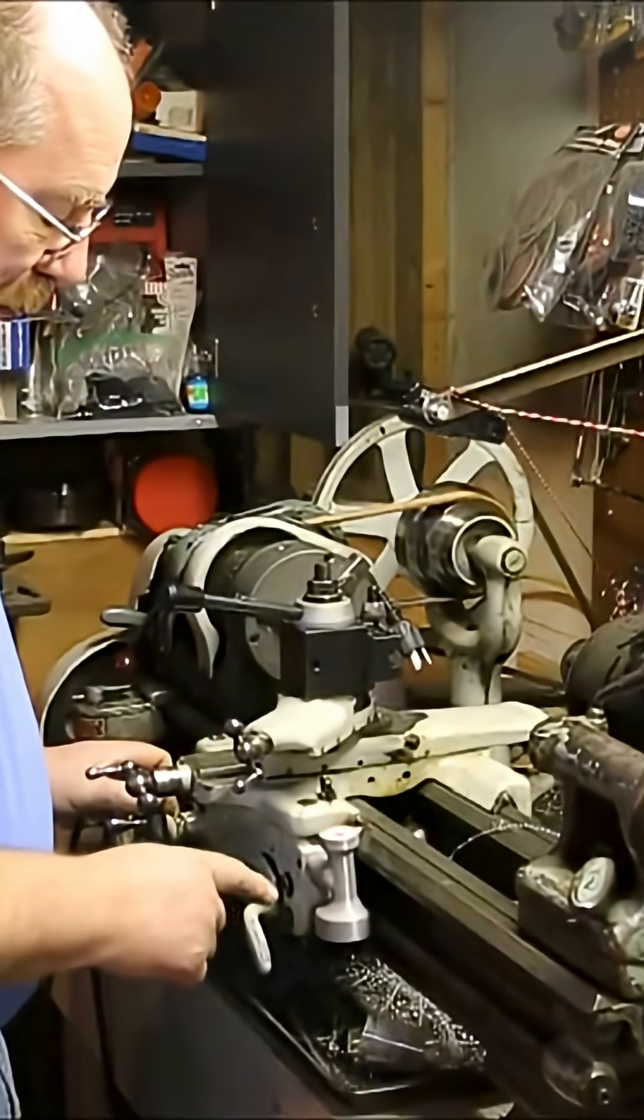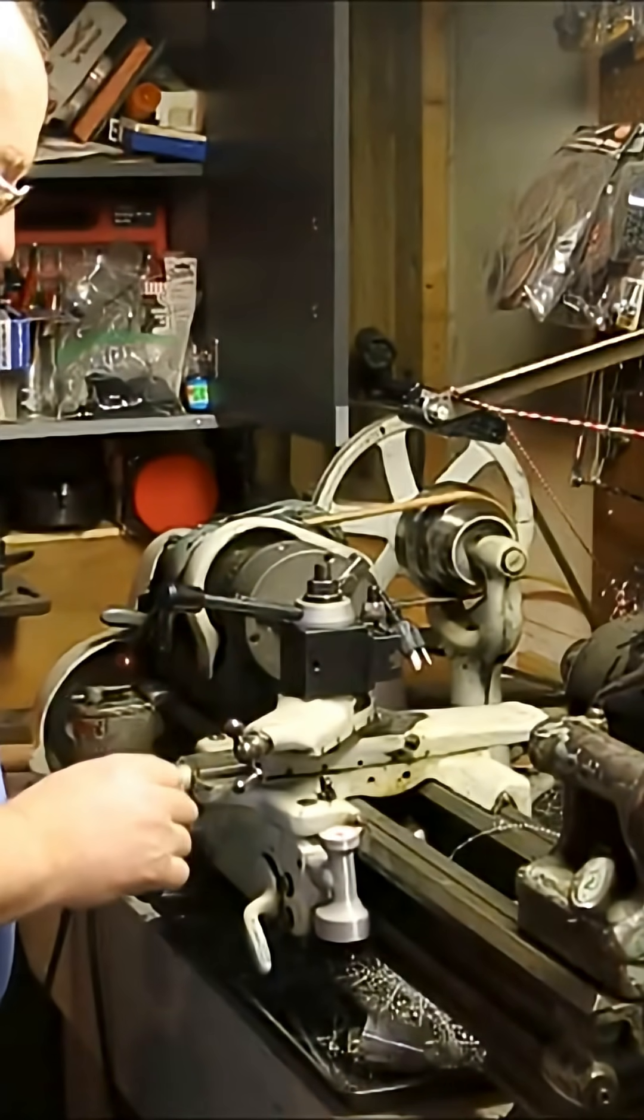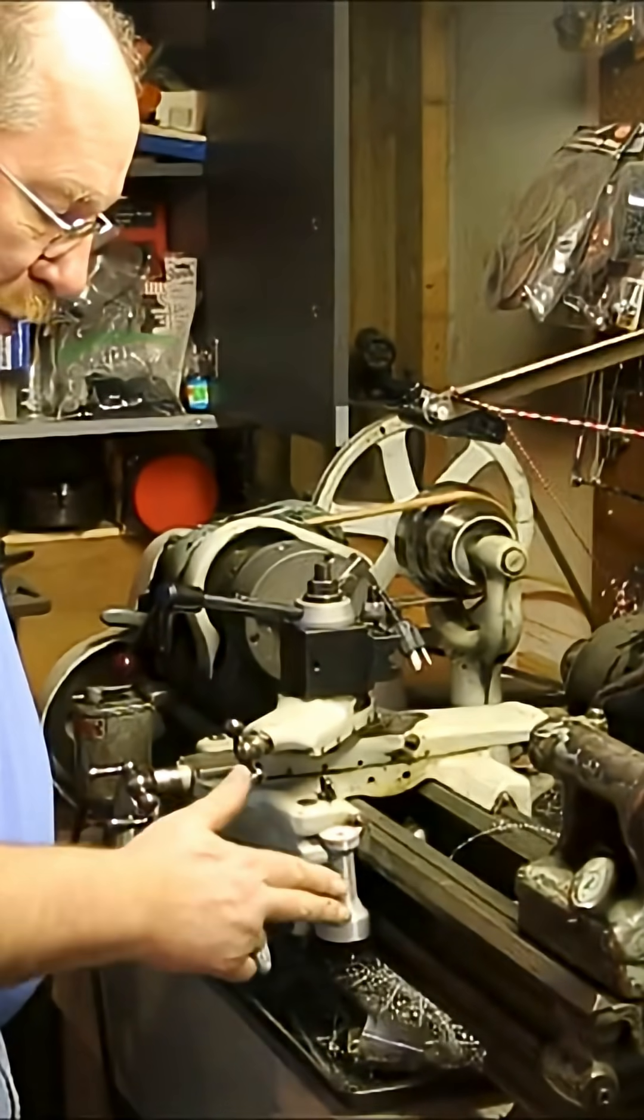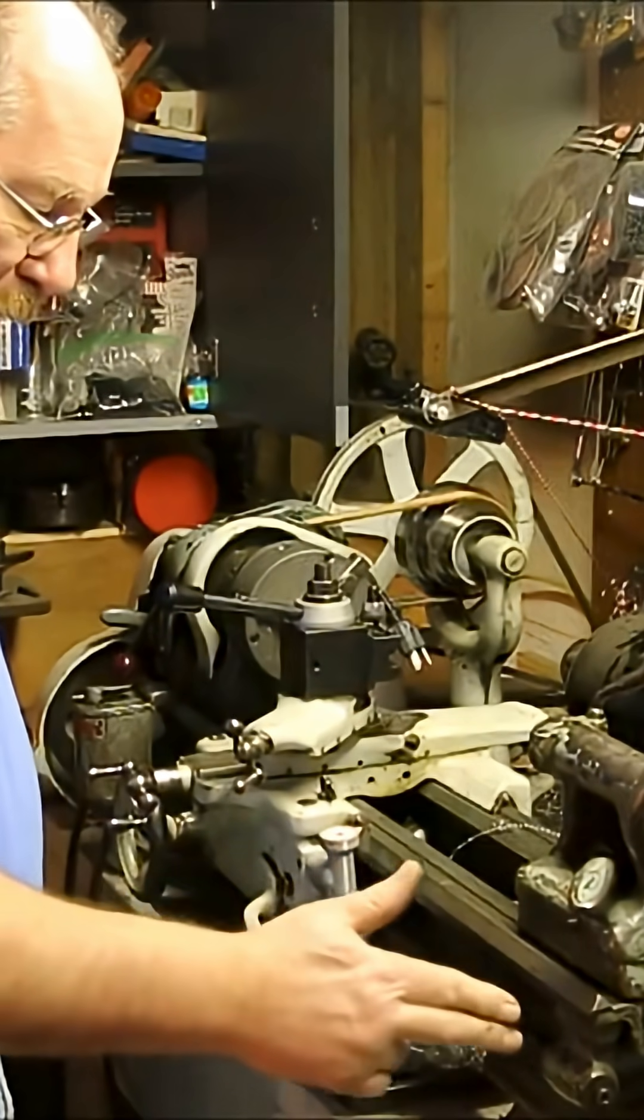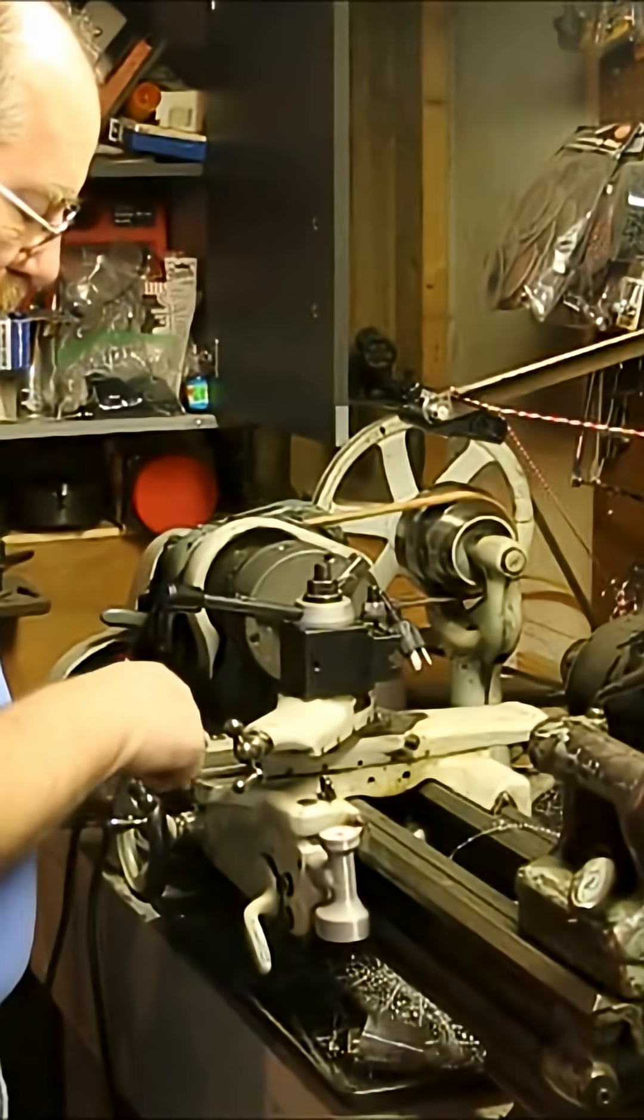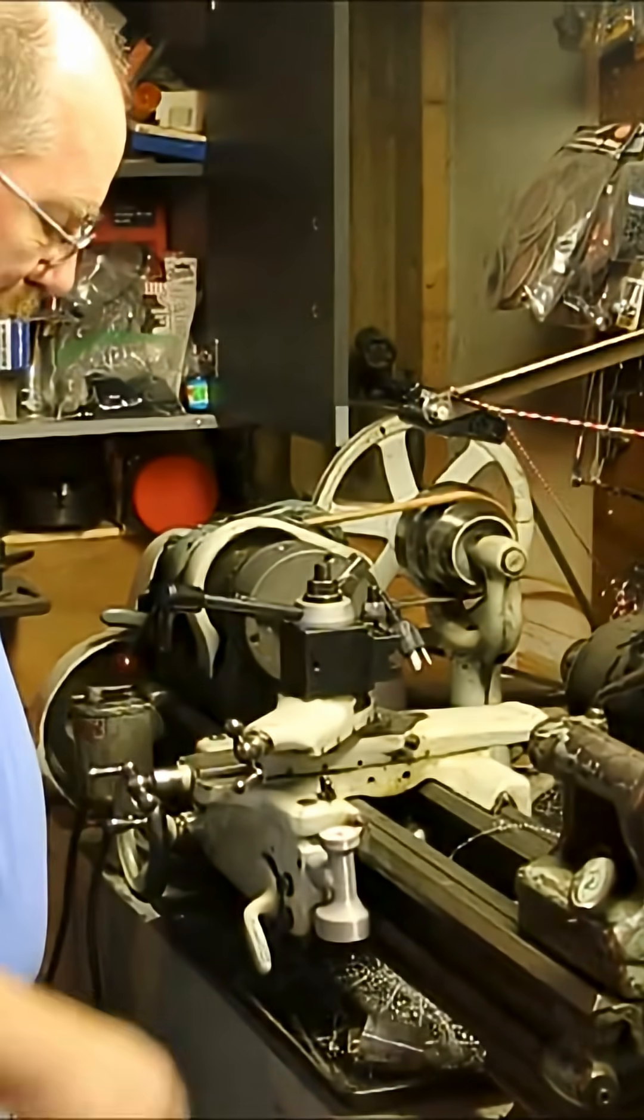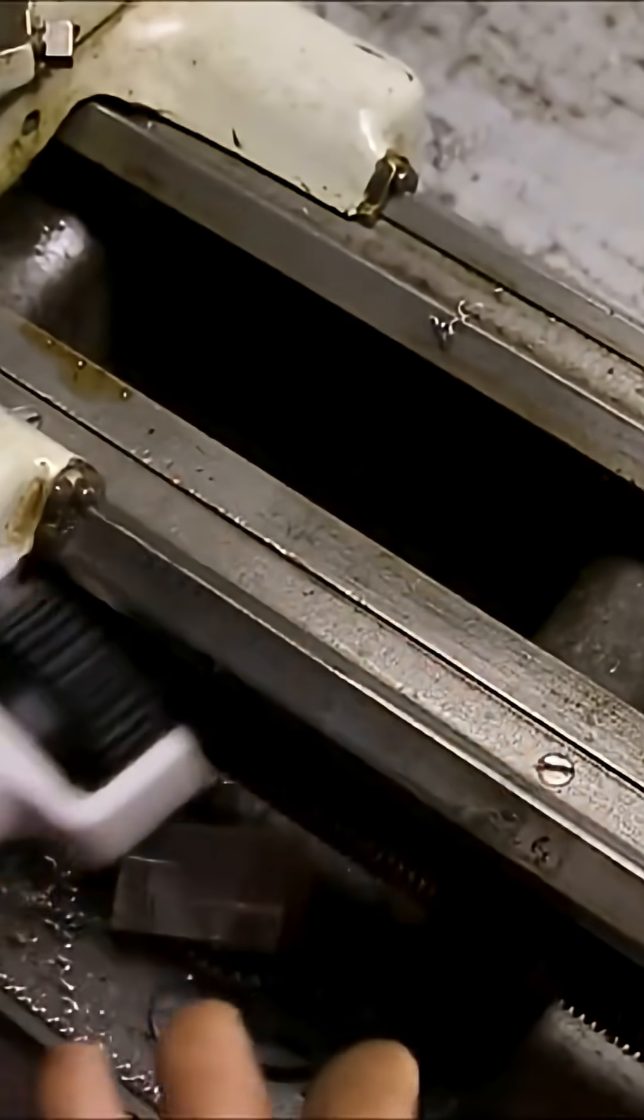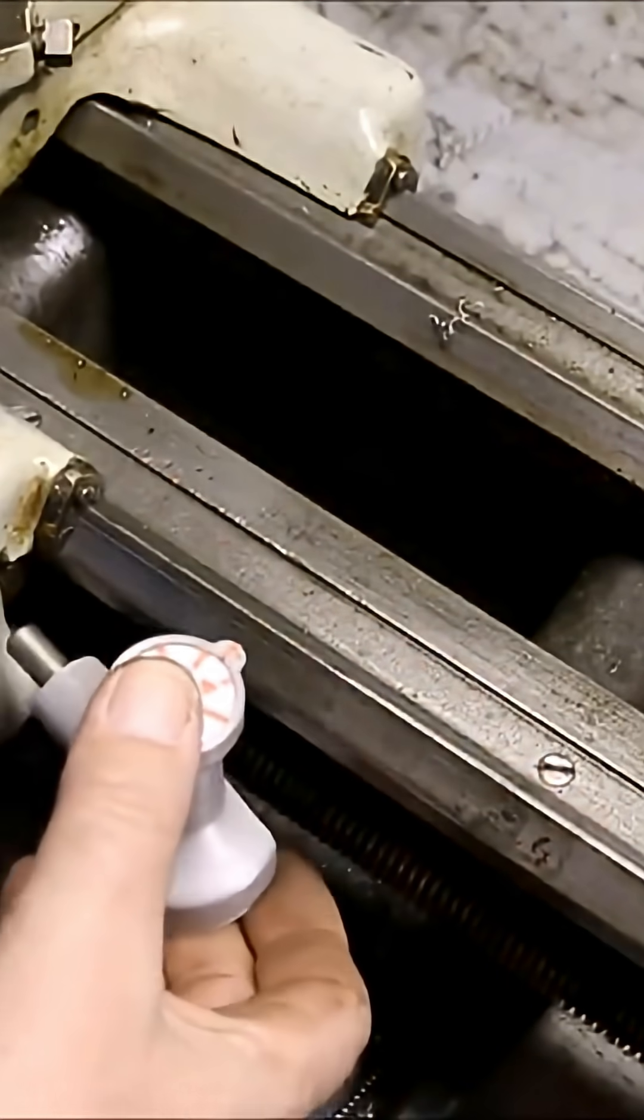This little item right here is called a threading dial, and the way it works is it has four positions on it. That tells you the relative position of this lead screw in relationship to the position of the cross feed. The unit has a small gear down here at the bottom and engages the lead screw.